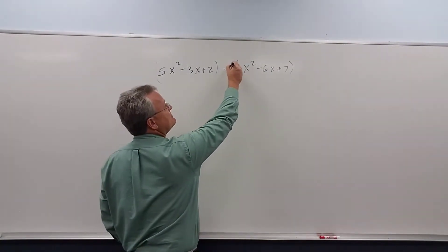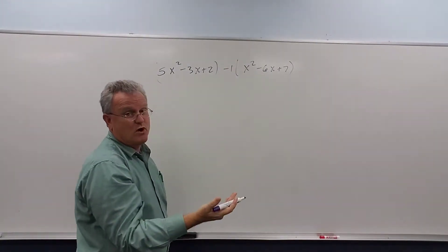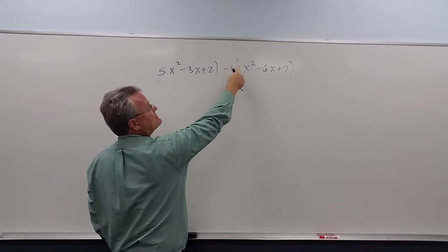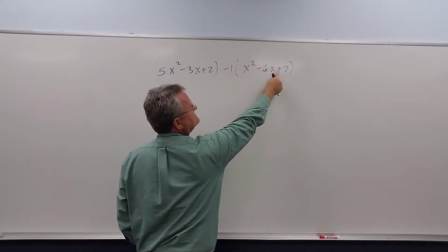Basically, we're distributing negative one. So when you distribute that negative, it just changes these signs.